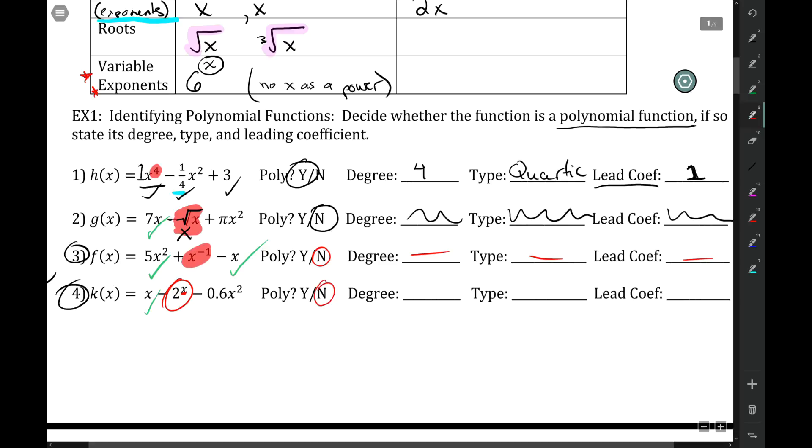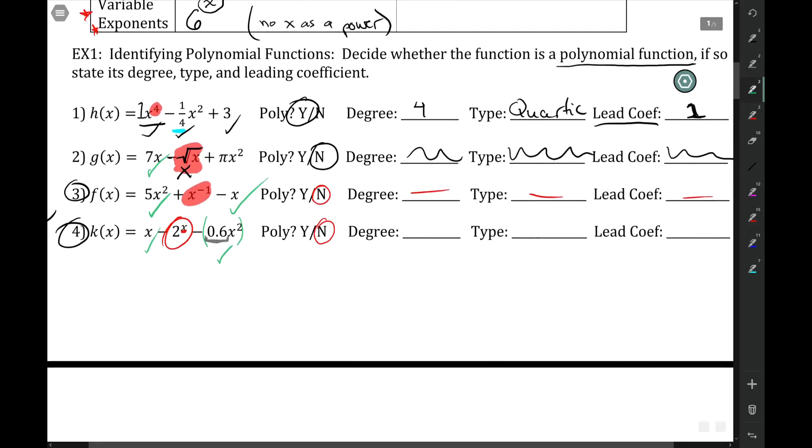Now, to be clear, this 0.6, despite being a decimal, this is really okay. This term is a polynomial-ish term. 0.6 is the constant, not anything else. It's not the exponent. So it's the exponent of x, making it not a polynomial.